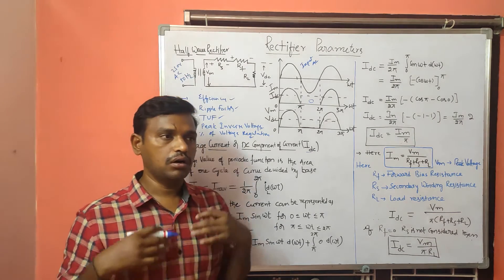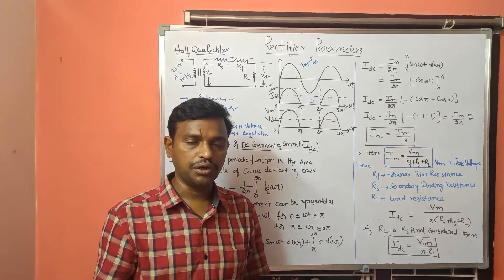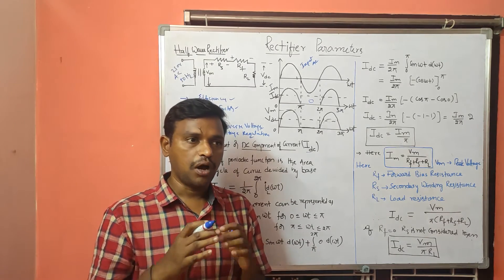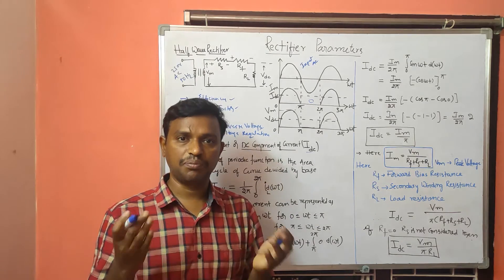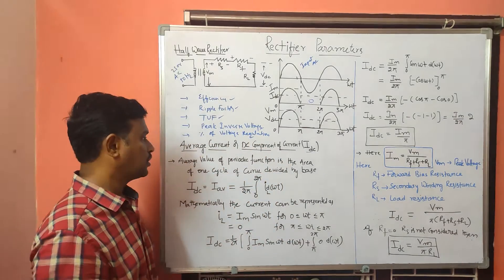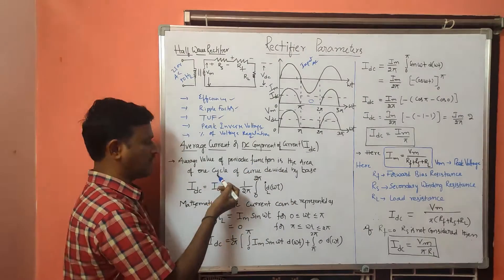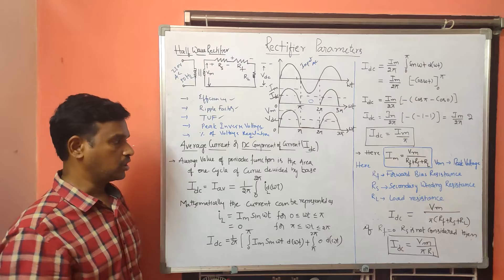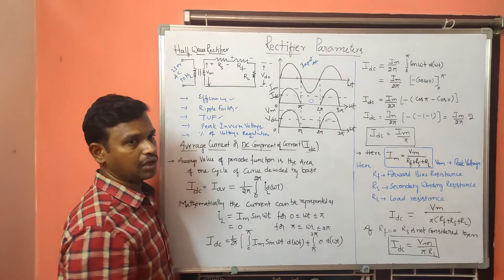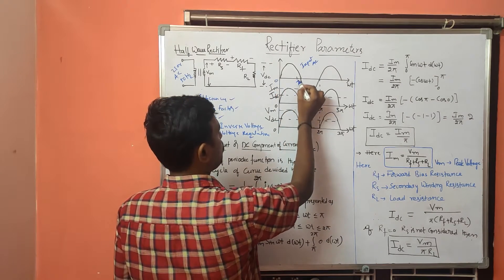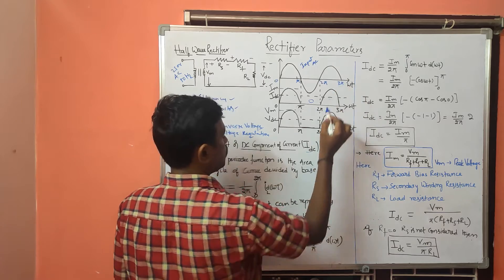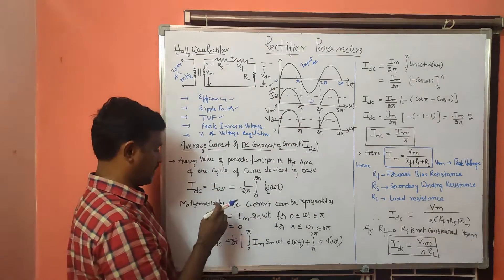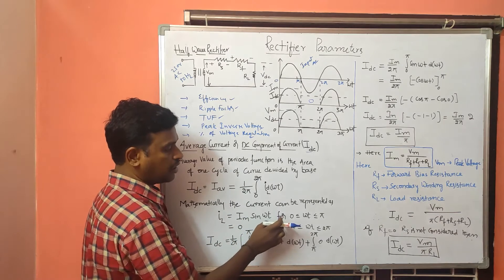IDC means the average current or DC component of the current. The average value or DC value of a curve is obtained by finding the area of the curve and dividing it by the base or time period. The mathematical representation of the output current is: IL = IM sin(ωt) for 0 ≤ ωt < π.